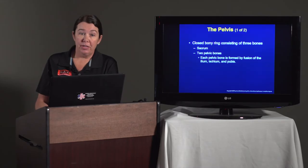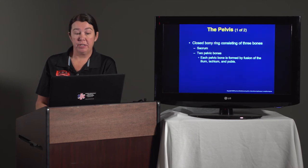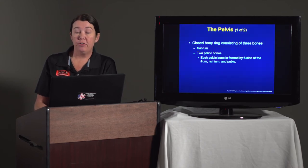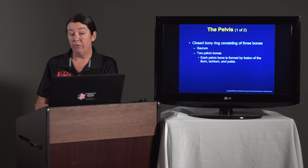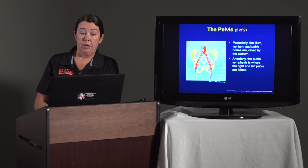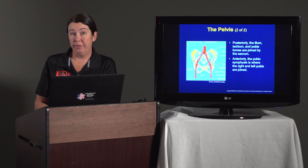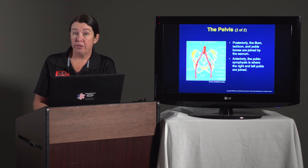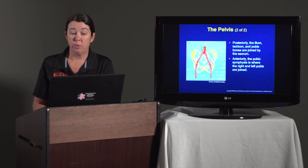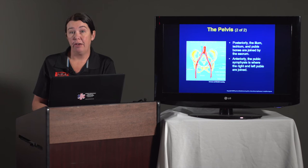The pelvis is a closed bony ring consisting of three bones: the sacrum and two pelvic bones. Posteriorly, the ilium, ischium, and pubis are joined at the sacrum, and anteriorly, the pubic symphysis is where the right and left pubis are joined.